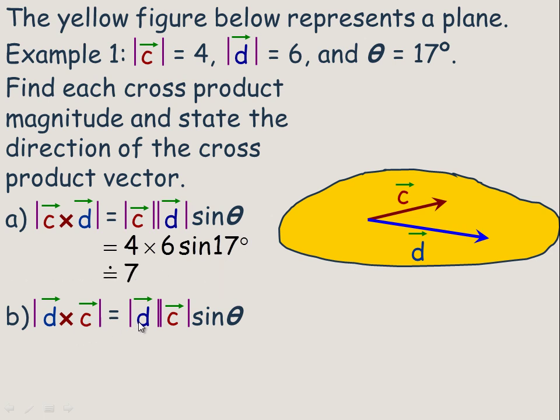And d cross c, we would go, instead of 4 times 6, it's 6 times 4, still times sine of 17. So changing the order of 4 times 6 to 6 times 4 does not change its magnitude. The magnitudes of both of those would certainly be the same.